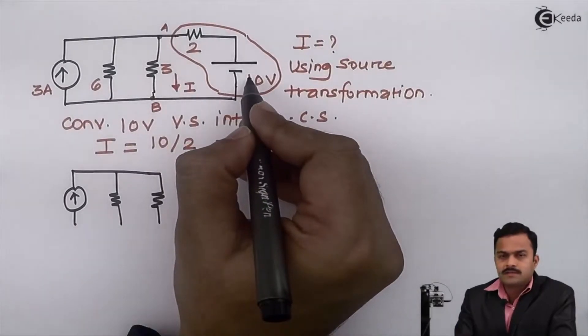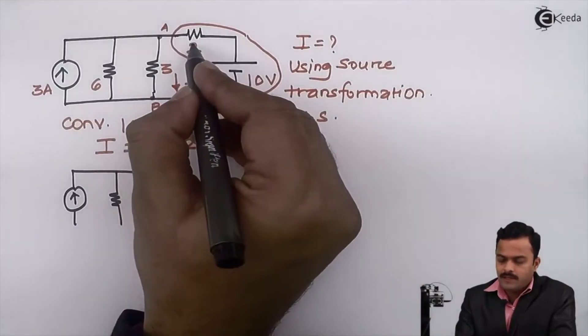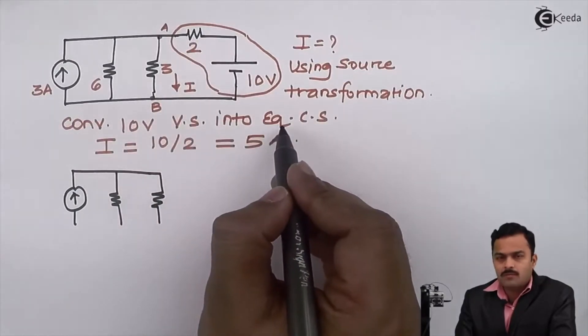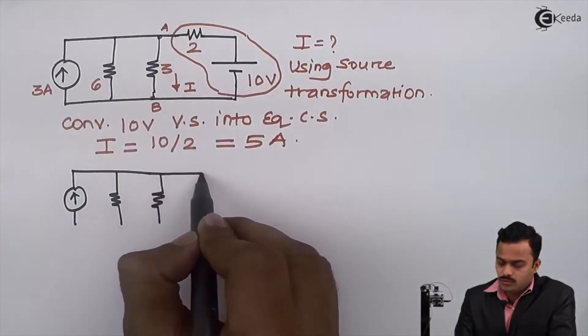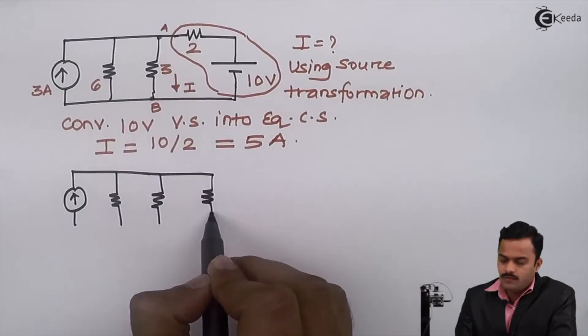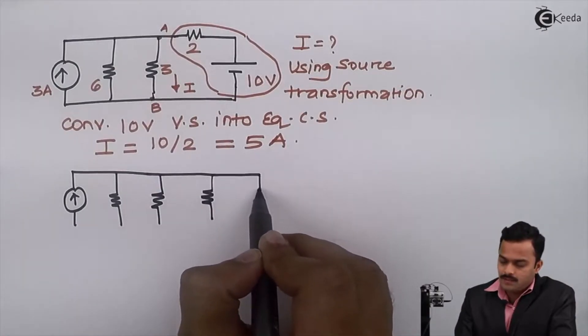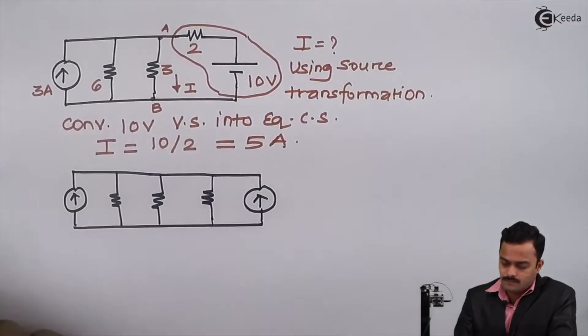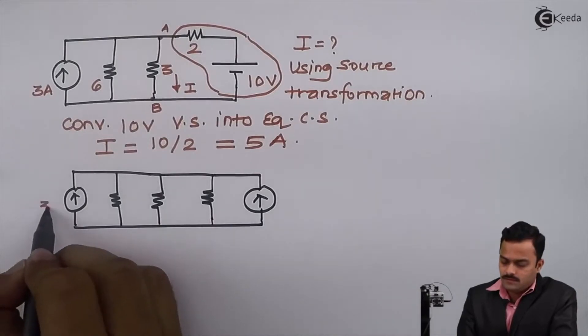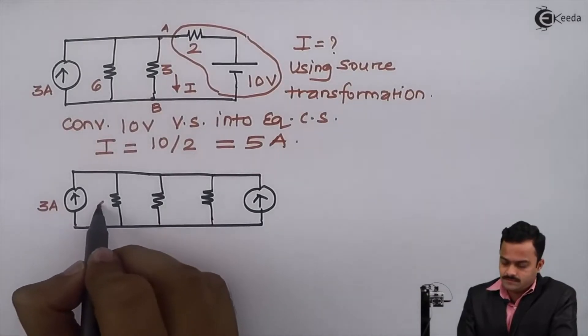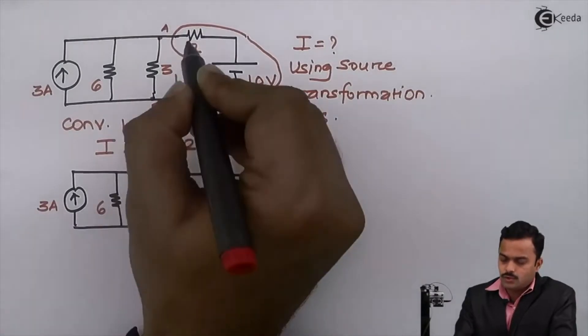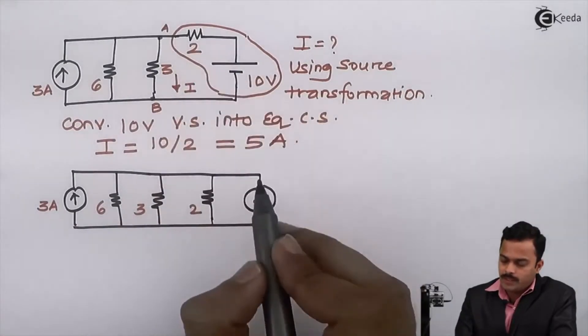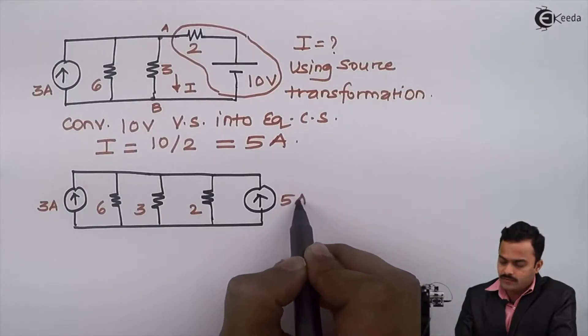So 10 volt in series with 2 ohm—when I transform that into equivalent current source, 2 ohm will come in parallel with the current source. This is untouched. 2 ohm coming in parallel, and 10 divided by 2 is a 5 ampere current source.